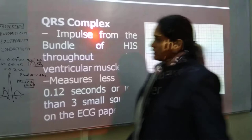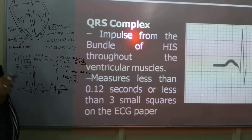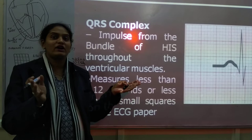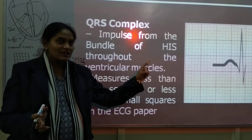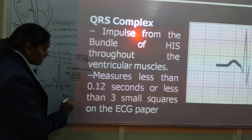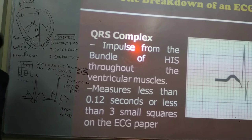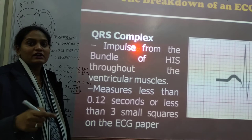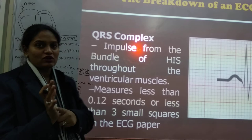Next, we move to the QRS complex. You can see this pointed complex here — the QRS complex basically gives us information about ventricular contraction. The ventricles are now contracting, and ventricular contraction is seen on the ECG as this pointed complex. On the ECG, the QRS should be less than 0.12 seconds, or less than 3 small squares. Remember: 0.04 multiplied by 3 equals 0.12, and it must be less than 0.12 seconds.